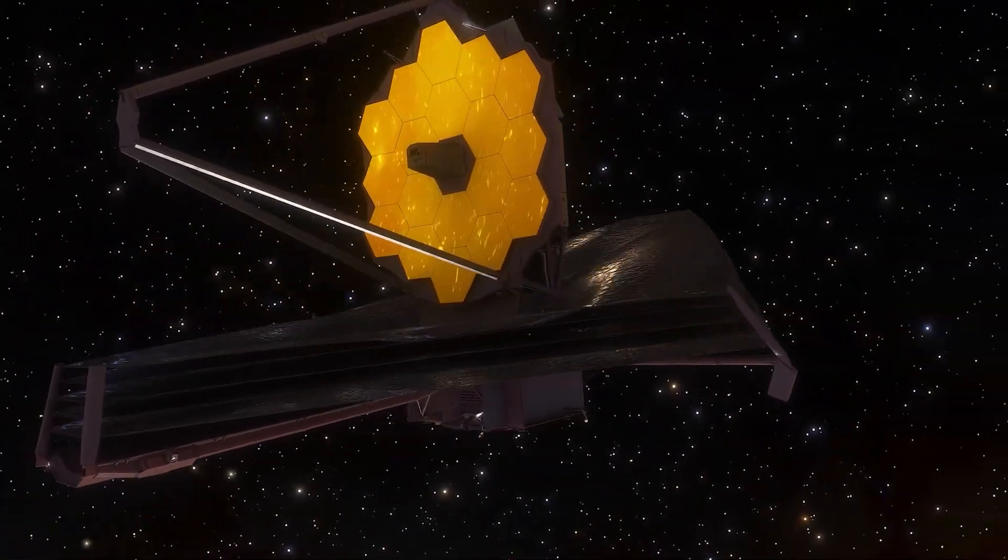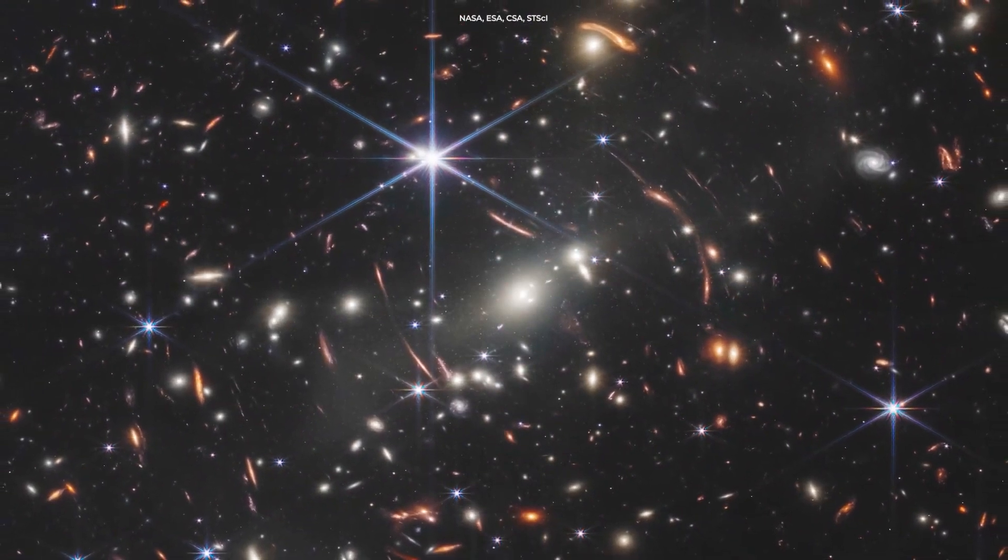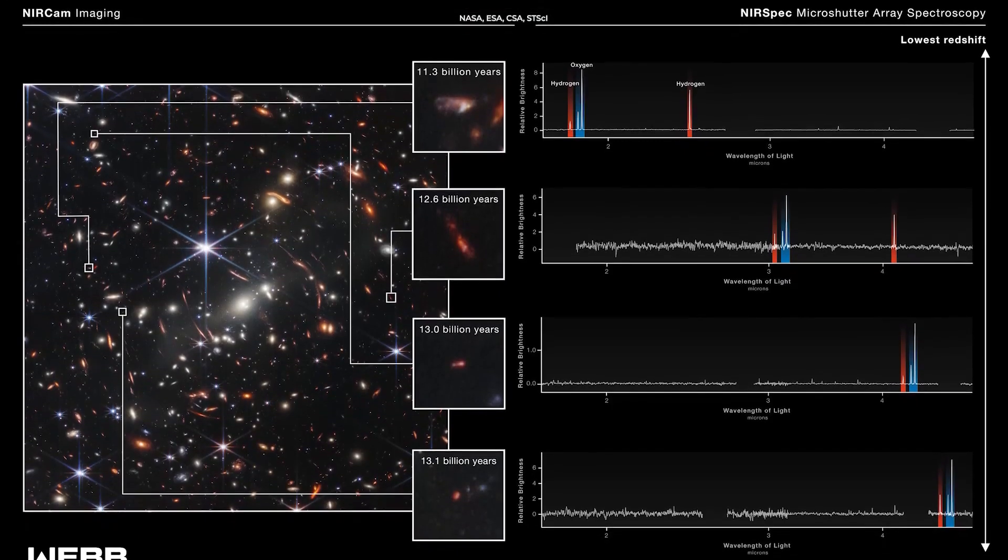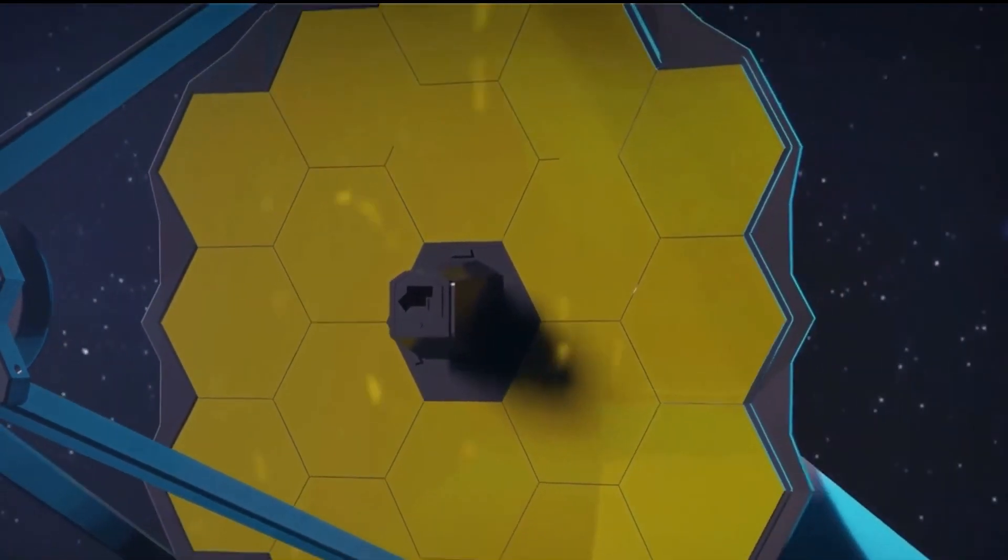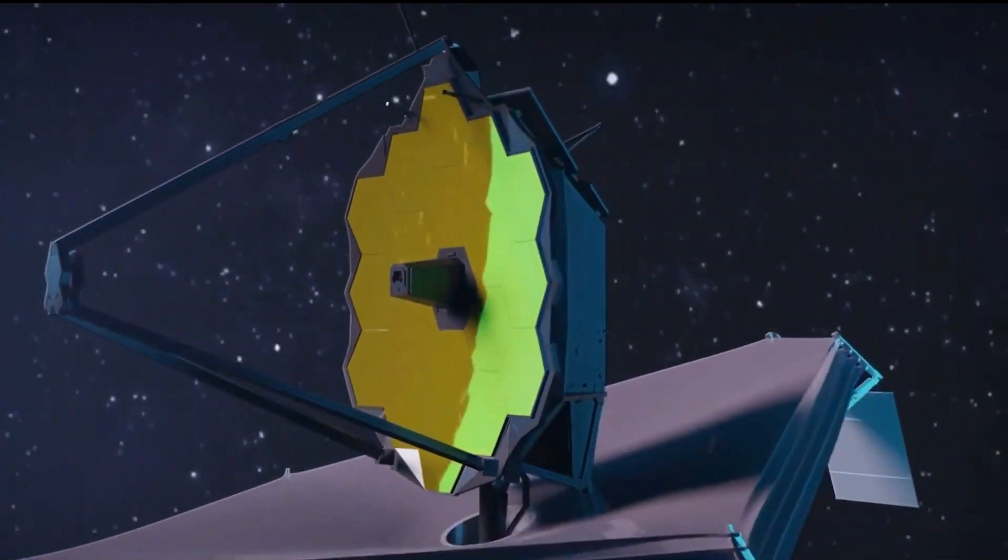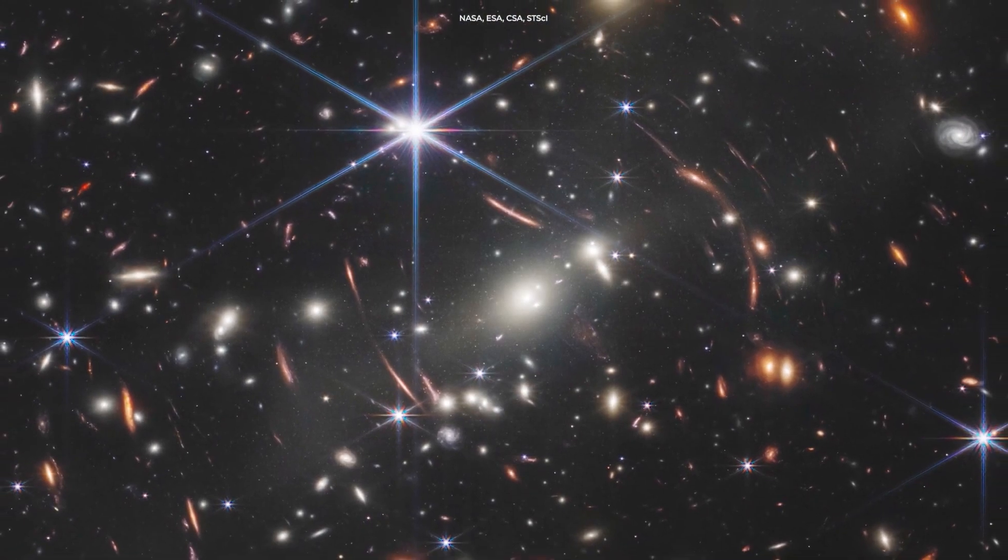The Webb Telescope was intended to explore the vastness of space in a bid to find and observe the most distant galaxies in existence. And that's something that it managed to achieve. According to scientists, the JWST was able to observe the four most distant galaxies ever known.